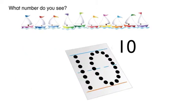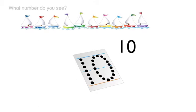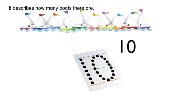What number do you see? It is the number ten. What does the number ten describe? It describes how many boats there are.